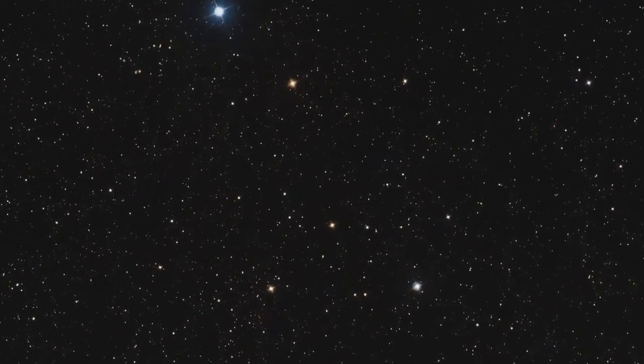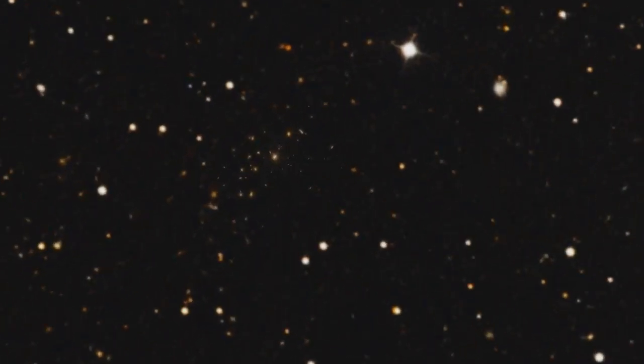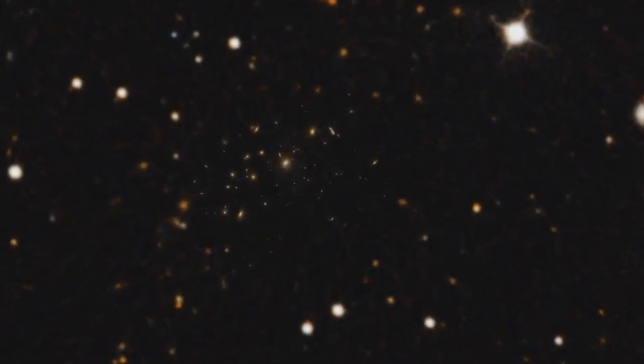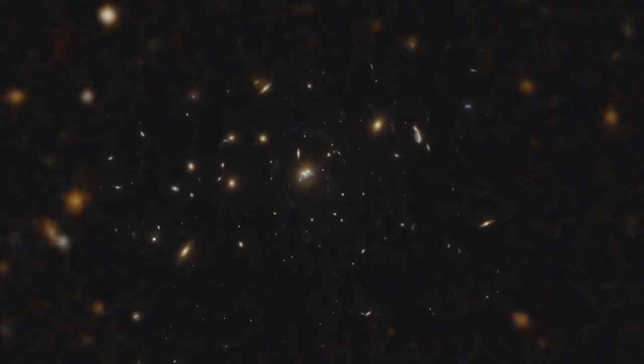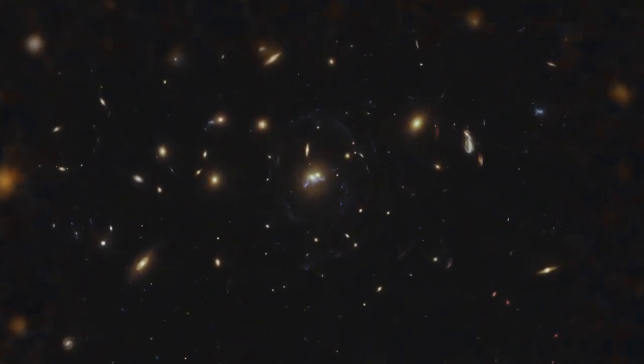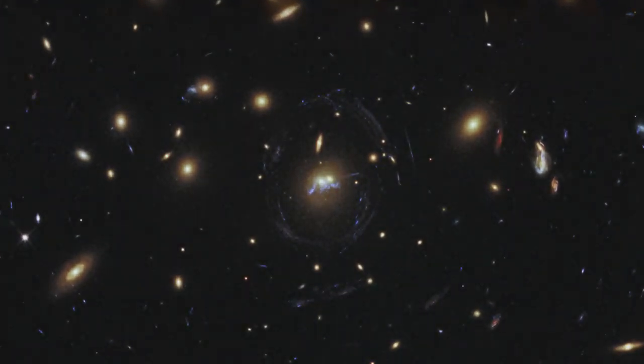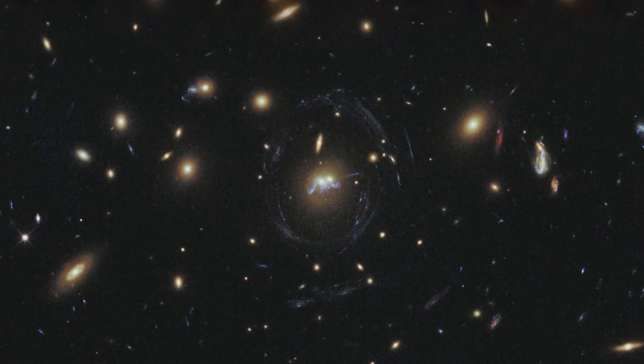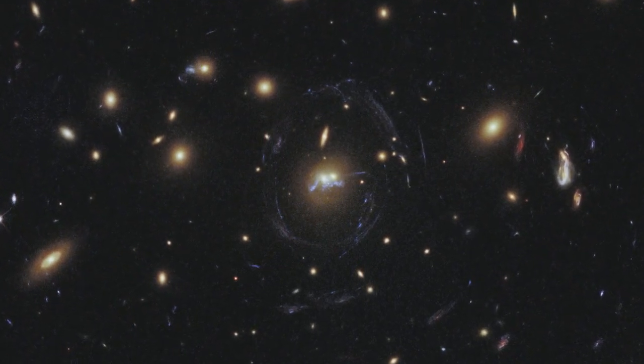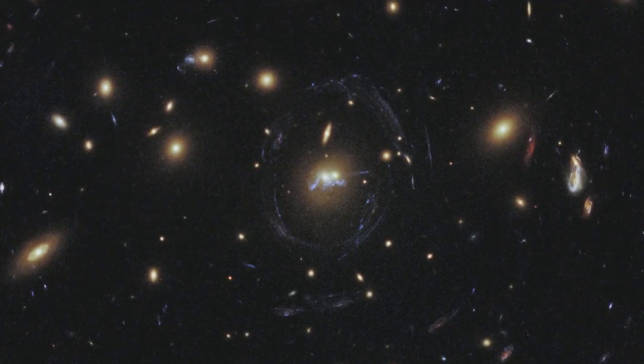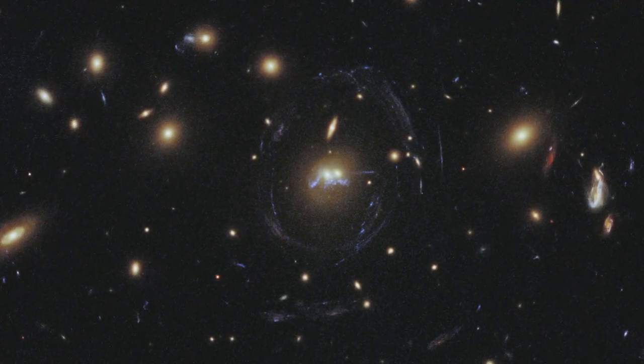This time, Hubble has captured something a little different, a little more unusual. At the centre of this image lie two elliptical galaxies, part of a galaxy cluster known rather prosaically as SDSS J1531 plus 3414. This cluster contains so much mass that it has bent light from more distant galaxies to form the spectacular blue arcs that surround it.